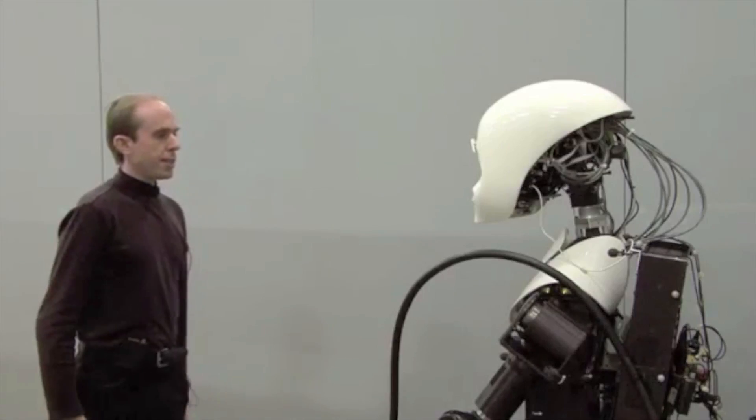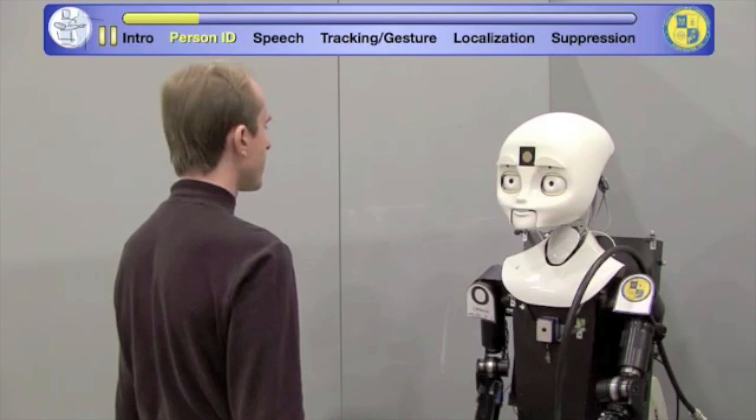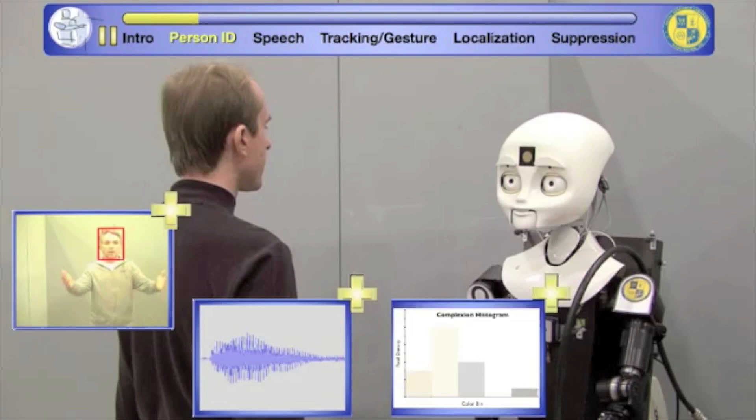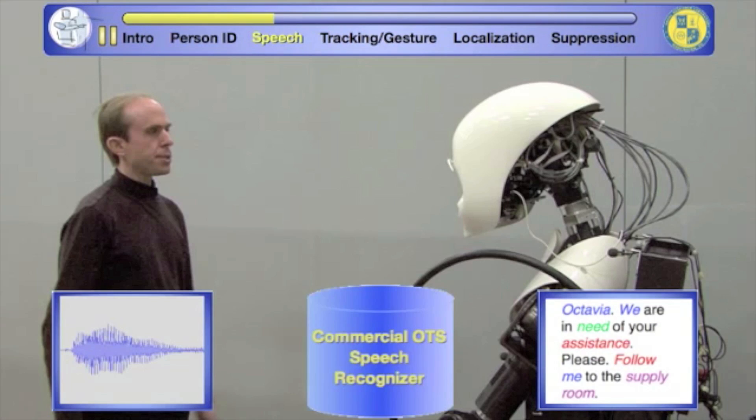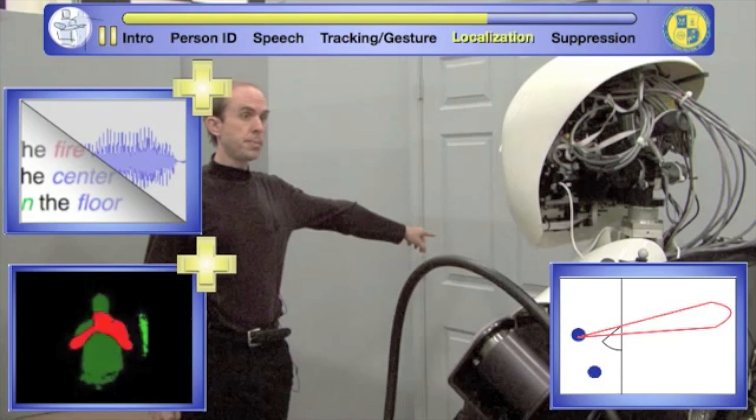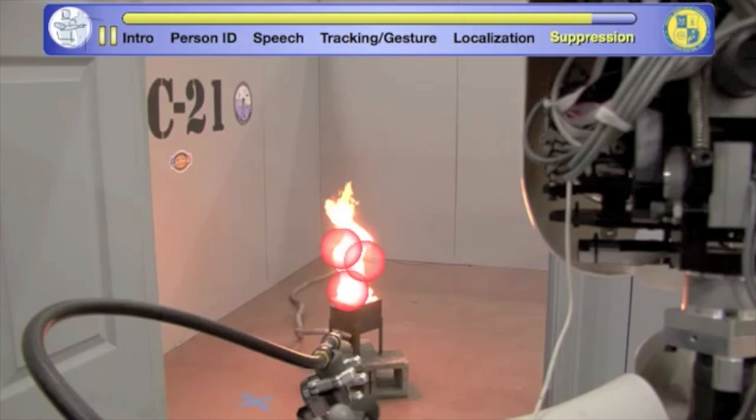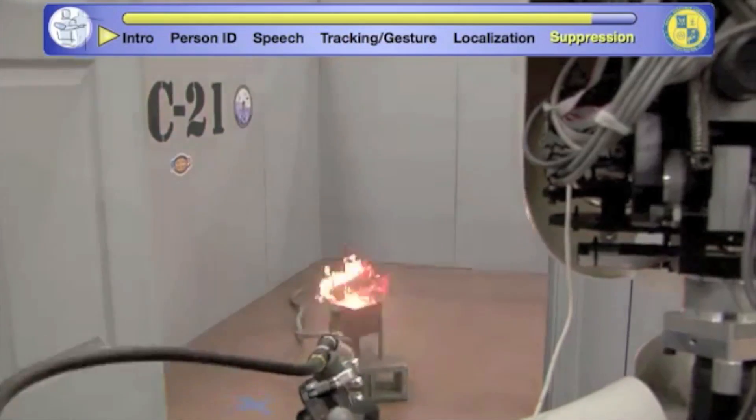If you need a firefighting robot friend there's Octavia. Developed by the US Naval Research Laboratory, this robot recognizes individuals using facial and vocal identifiers. It understands commands with a speech recognizer, understands gestures and extinguishes fires by aiming the hose at the brightest spots.